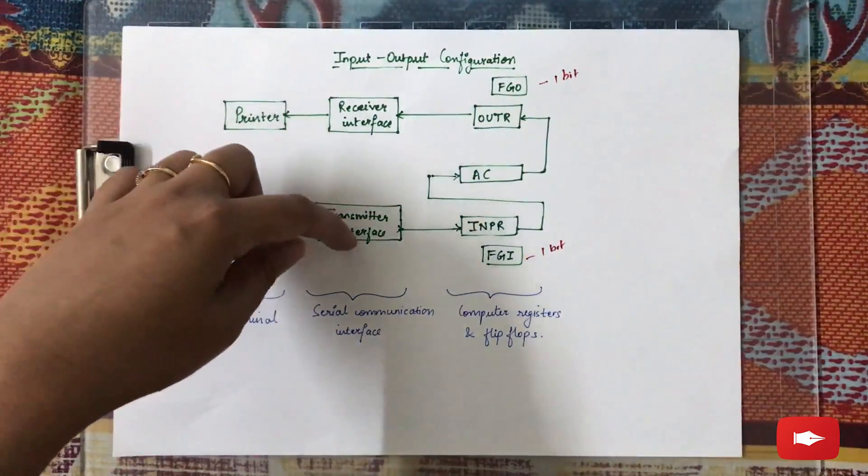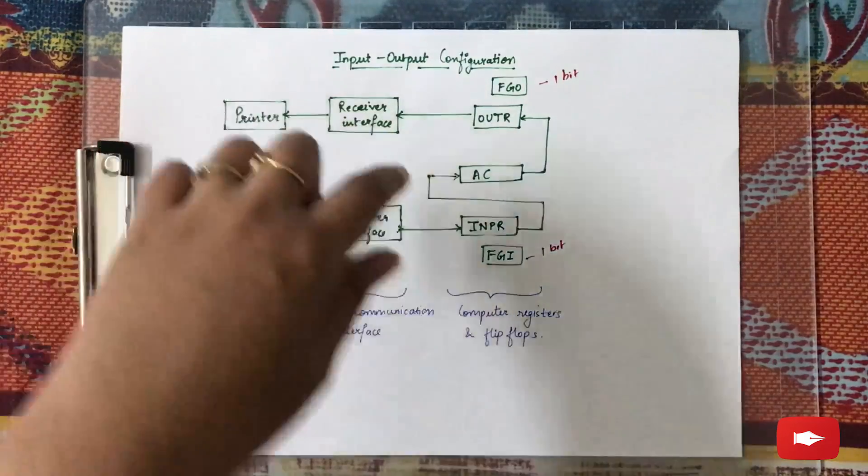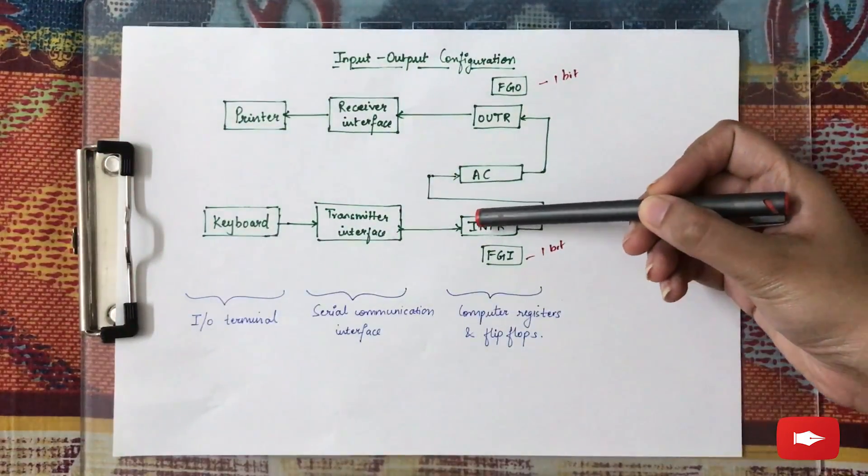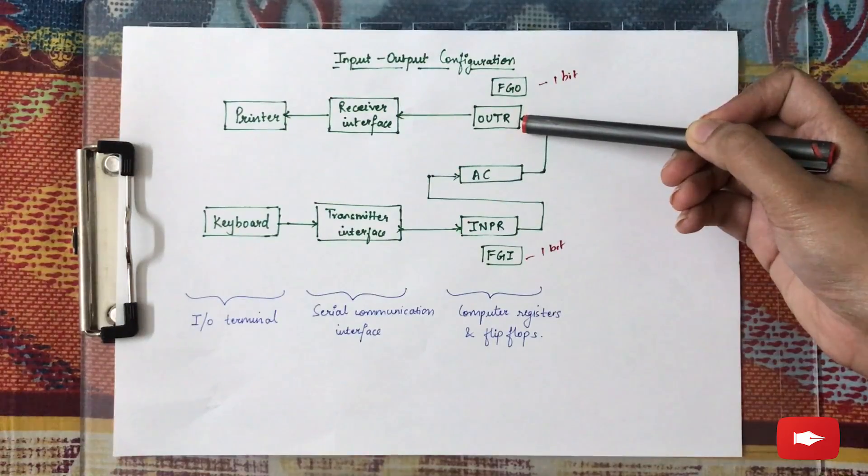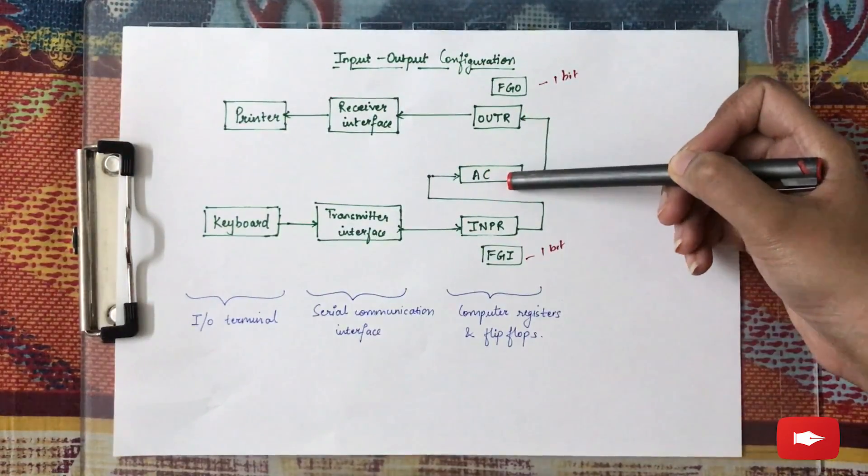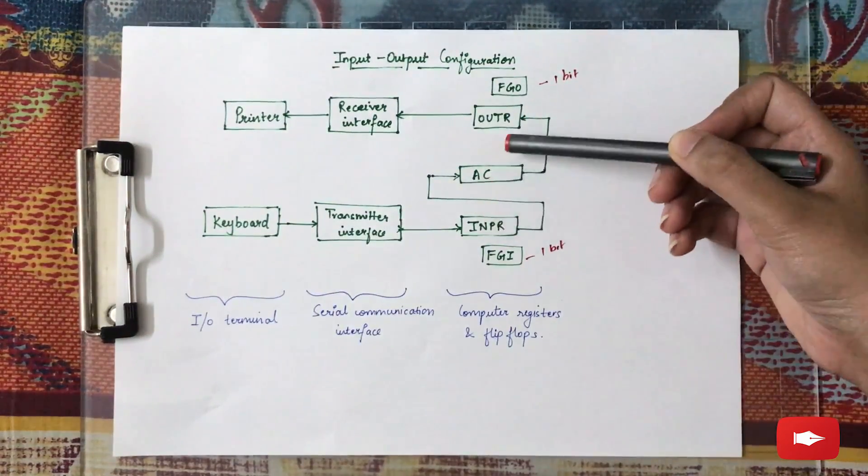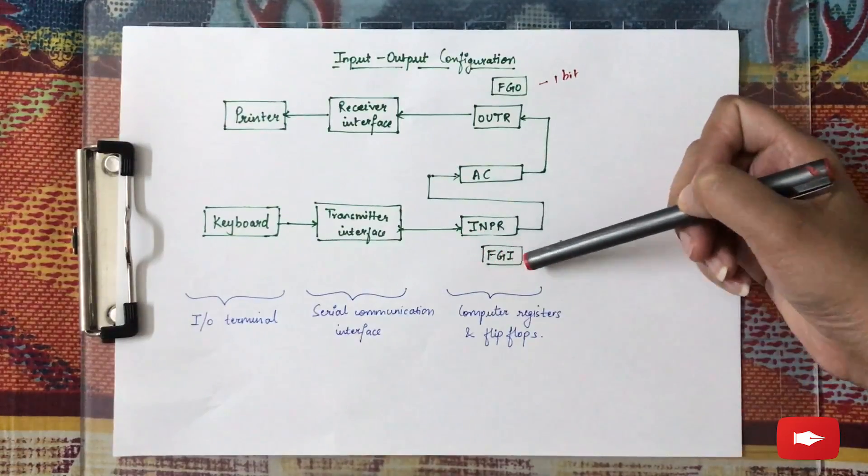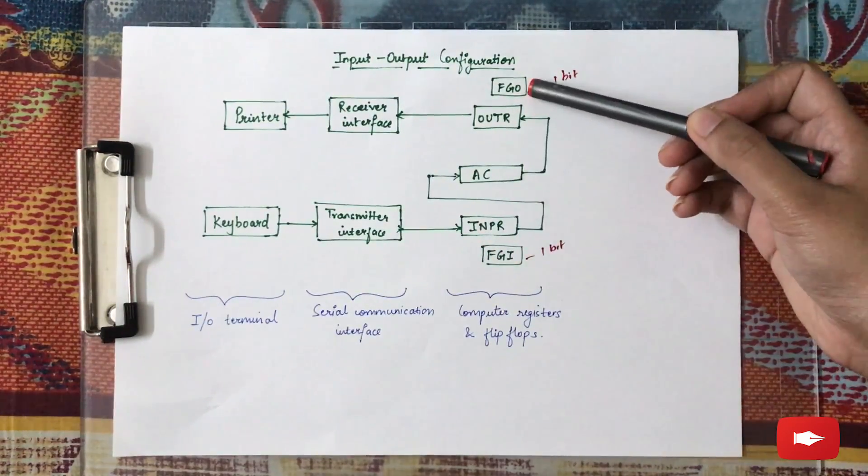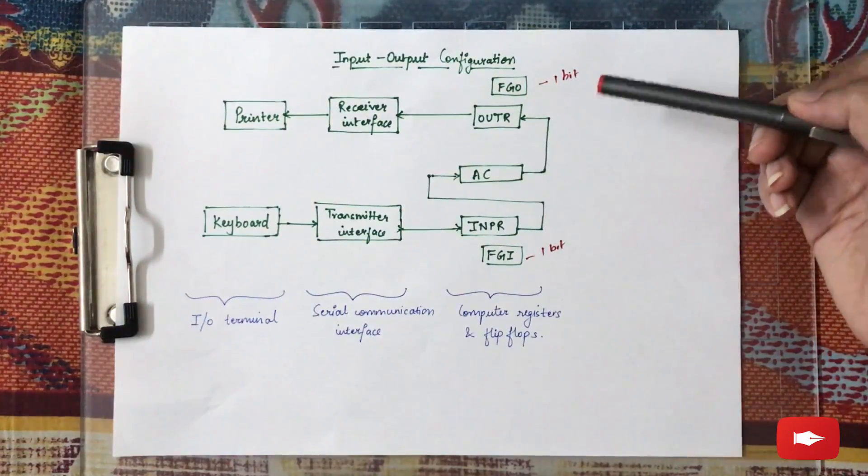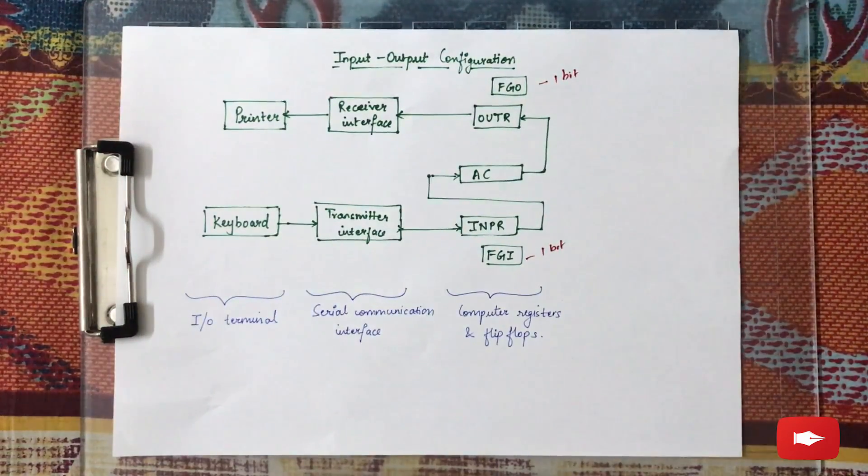What we have here are the input and output devices. These two act as the interface, and here INPR and OUTR are the input and output registers. AC is the accumulator, which runs in parallel to the input and output registers. FGI and FGO are both control flags - this is the input flag, this is the output flag, and both are one bit each.